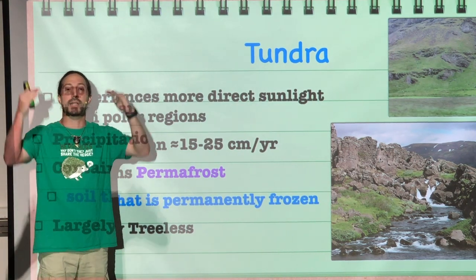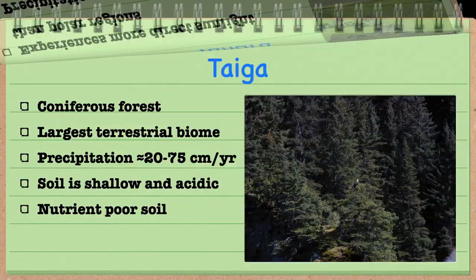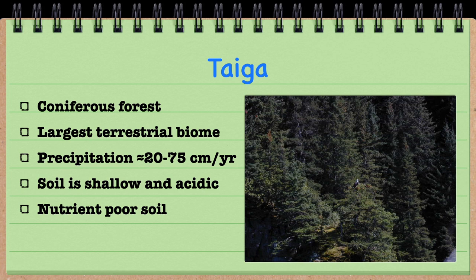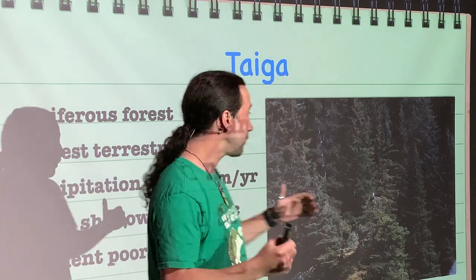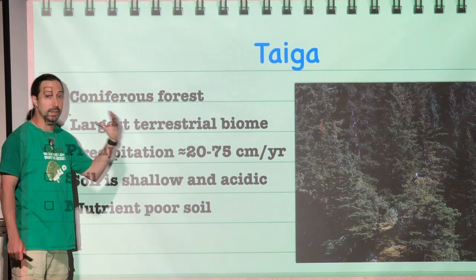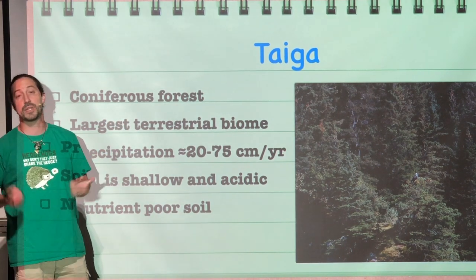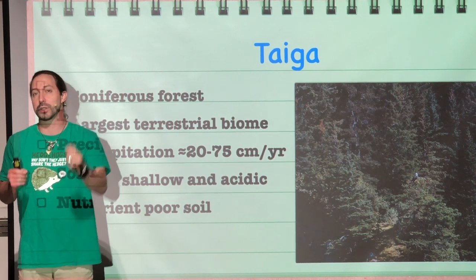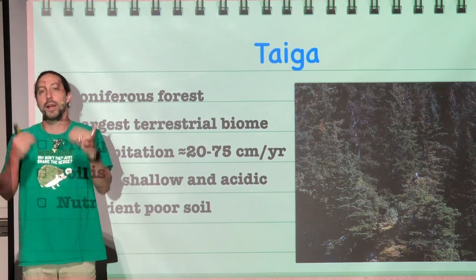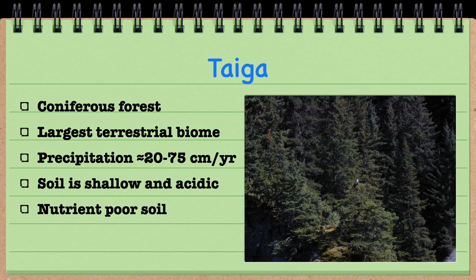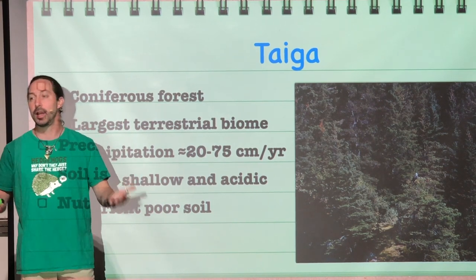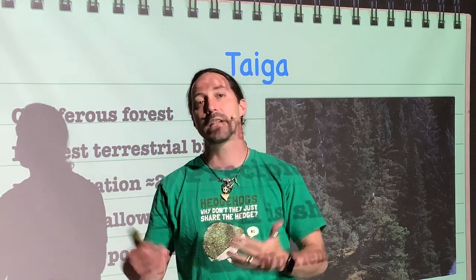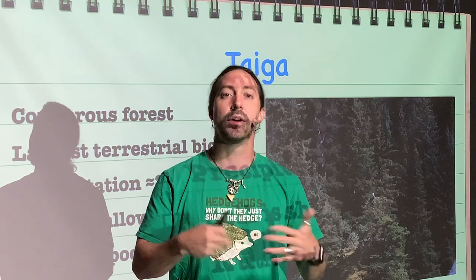Moving a little bit further south, we would end up with a taiga — a coniferous forest. The taiga is the largest terrestrial biome that exists on this planet. It gets a little more precipitation than the tundra, with 20 to 75 centimeters a year. It also receives more direct sunlight, providing more light energy for plant life to grow. The soil is shallow and acidic, and generally nutrient poor, but it can still support trees because it doesn't have permafrost — roots can penetrate deeper into the soil. That's why we can have trees in a taiga, whereas in a tundra we could not.